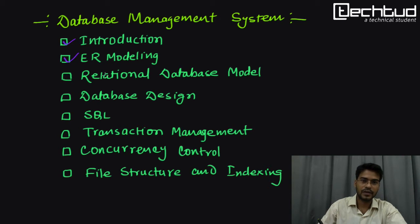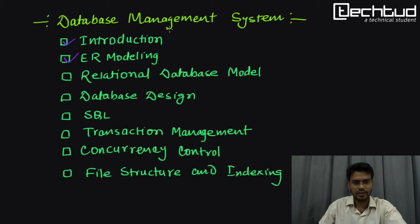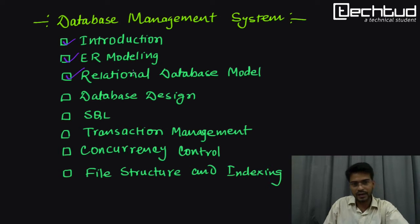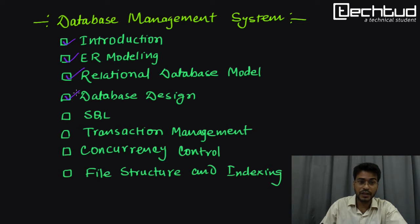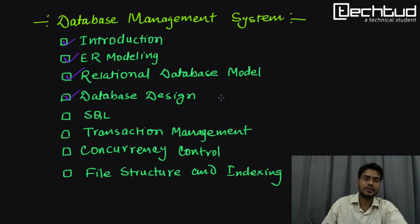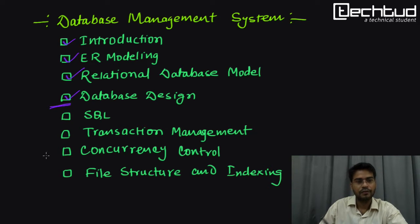Then we will move forward to the relational database model, covering its basics, which is the intention of this course. Afterwards, we will cover database design — what our tables will be, the various relationships among tables, candidate keys, and all related concepts. We will also consider normal forms, meaning the maximum redundancy we can tolerate.